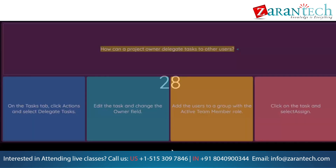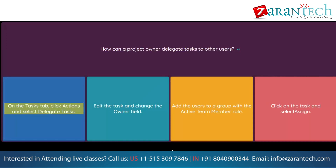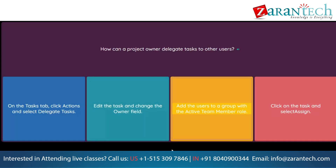Question: How can a project owner delegate tasks to other users? Option 1: On the Tasks tab, click Actions and select Delegate Tasks. Option 2: Edit the task and change the owner field. Option 3: Add the users to a group with the active team member role. Option 4: Click on the task and select Assign.